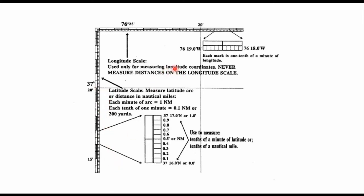So let's do some examples. Let's do 37 degrees 22.3 minutes north and show me where that would be on the latitude scale. It would be right here. Here's 37 degrees 20, here's 21, here's 22, and then 0.3 would be about right there.